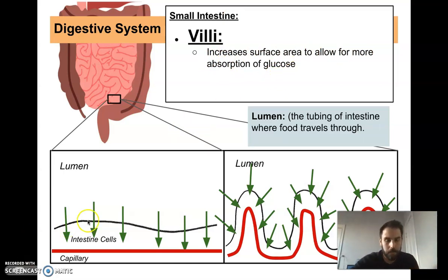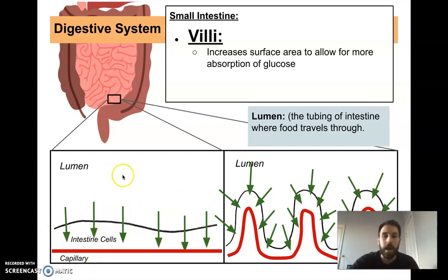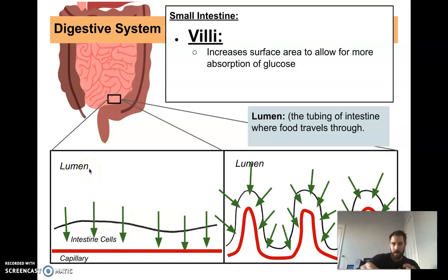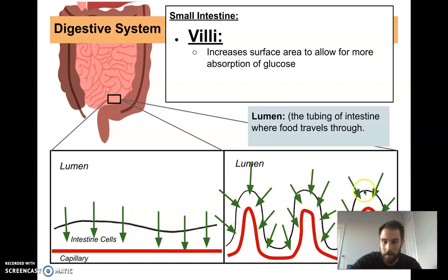Imagine we had a small intestine without villi — you could still have diffusion. These arrows represent glucose going from the intestine into your bloodstream. They could go across the flat surface. By the way, the inside of your small intestine — the tubing — is specifically called the lumen. But now instead of just a flat surface, let's make it hilly — those hills are the villi. Now we have so much more surface for glucose to go from inside the small intestine and the lumen into the bloodstream. That maximizes the amount we can actually absorb — we don't want any food to go to waste.